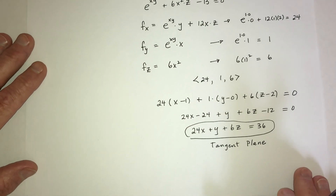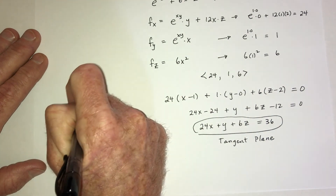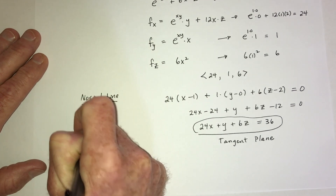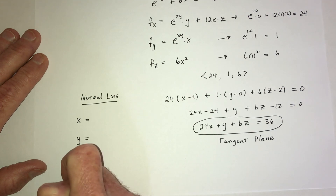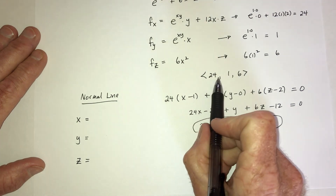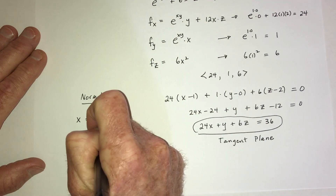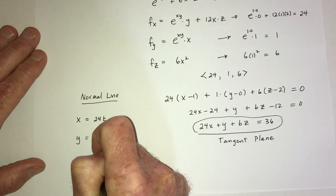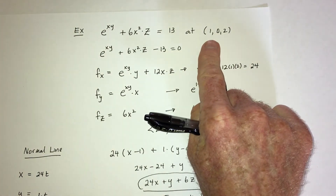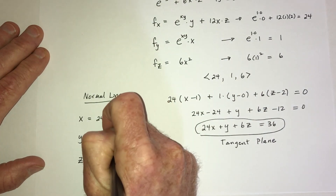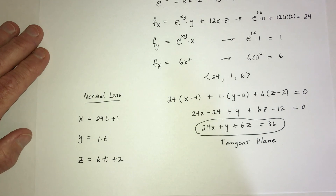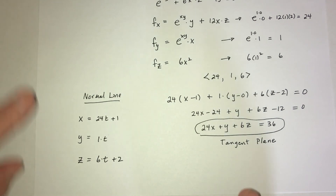For the normal line, since it's a line we put it in parametric form: x = 24t + 1, y = t + 0, z = 6t + 2. You take the numbers from the gradient vector for the coefficients of t and add the coordinates of the given point.